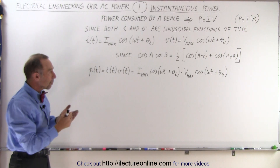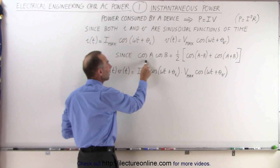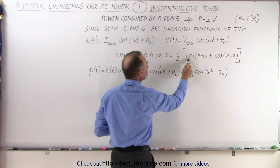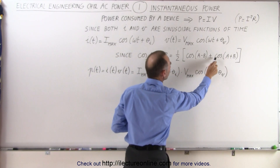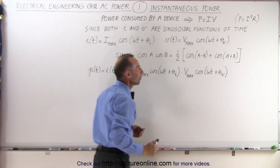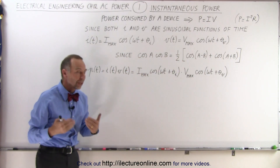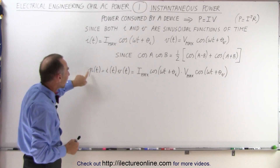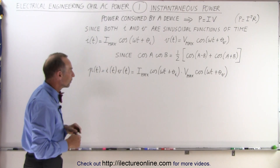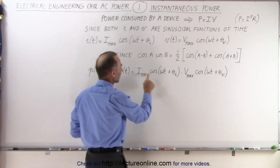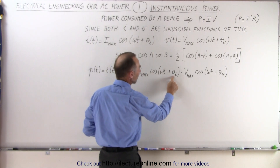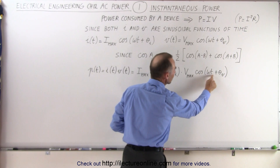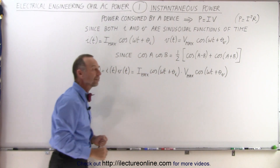We need to remember that the cosine of a times the cosine of b equals one half the cosine of (a minus b) plus the cosine of (a plus b). We're going to use that trigonometric identity to find the power, since power is defined as the product of the current and the voltage: i_max times cosine of (omega t plus theta_i) times v_max times cosine of (omega t plus theta_v).